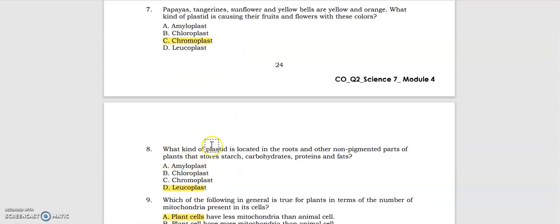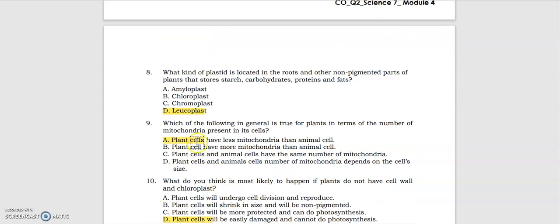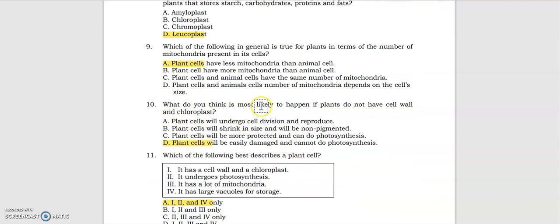Number nine: which of the following in general is true for plants in terms of the number of mitochondria present in its cells? The answer is plant cells have less mitochondria than animal cells. Number 10: what do you think is most likely to happen if plants do not have cell wall and chloroplast? The answer is letter D, plant cells will be easily damaged and cannot do photosynthesis.